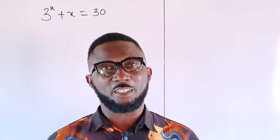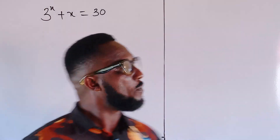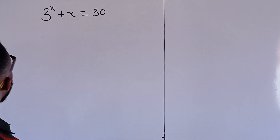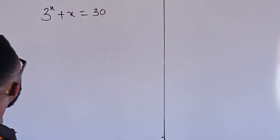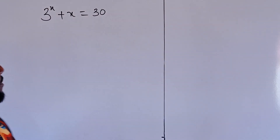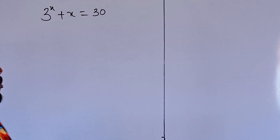Let's find the solution to the problem we have today. We have 3 to the x plus x equal to 30. This is a very special type of exponential equation.